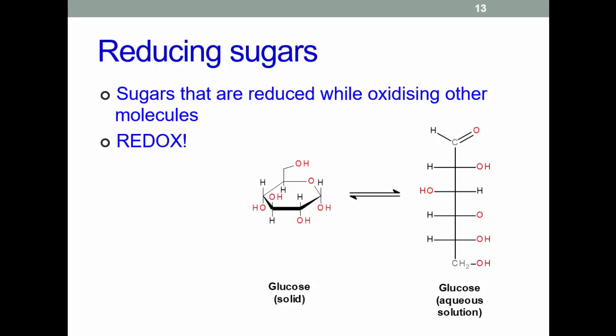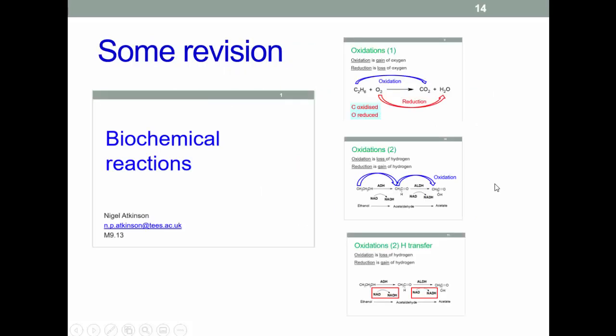Before we go further, note that simple sugars like glucose exist in the ring form in solid state, but when they dissolve in water the ring opens, exposing the aldehyde group at C1 — and that is where the Maillard reaction takes place. This is included in the module notes, and there's also a presentation video in the playlist with a reminder about oxidation-reduction reactions.